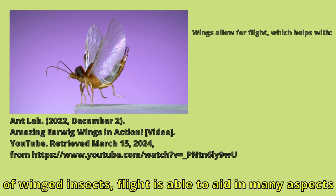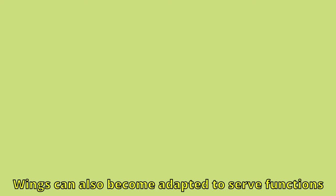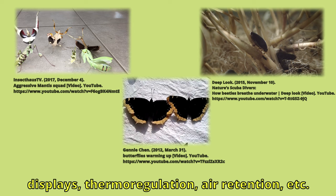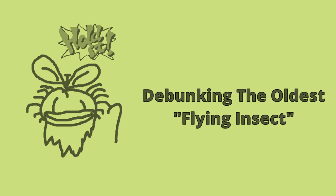To really hammer in the importance of the expanse of winged insects, flight is able to aid in many aspects of an individual's life. Just some basic examples are enhanced predator avoidance, increased prey capture rates, enhanced locomotion, access to once unavailable resources, and more. Wings can also become adapted to serve functions other than flight, such as sexual or intimidation displays, thermoregulation, air retention, etc. In short, there are innumerable functions and abilities wings enable, so their appearance in insects cannot be understated, as their evolutionary history for the most part revolves so heavily around them.